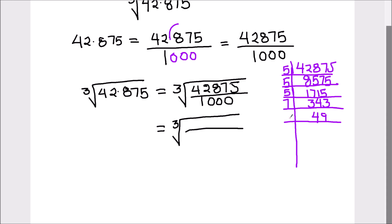So we got the factors of 42,875 as 5 times 5 times 5 times 7 times 7 times 7, and the factors of 1000 as 10 times 10 times 10. As we are finding the cube root we can write these numbers in exponent form as 5 cube times 7 cube divided by 10 cube.